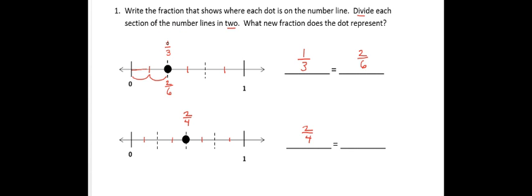Which means now I have 8 pieces that make up the whole. And if I count those pieces, I have 1, 2, 3, 4 eighths that represent the dot. That means that 2 fourths and 4 eighths are equivalent fractions. So you can see how the number line can help us find those equivalent fractions.